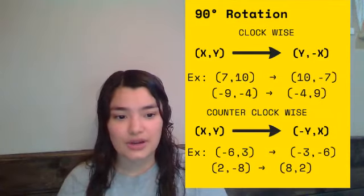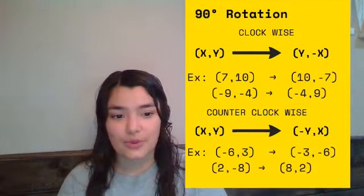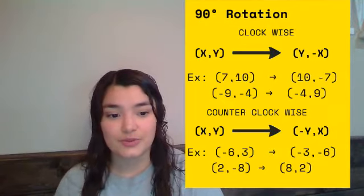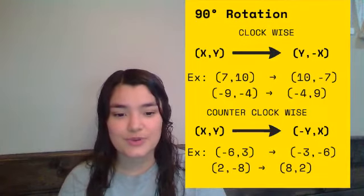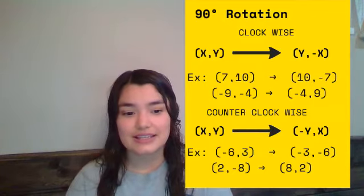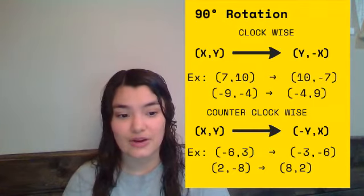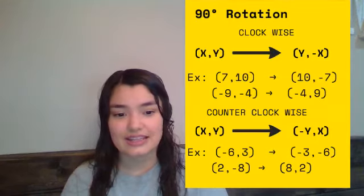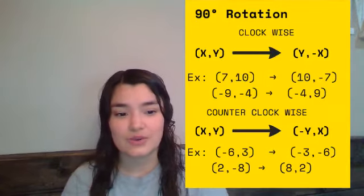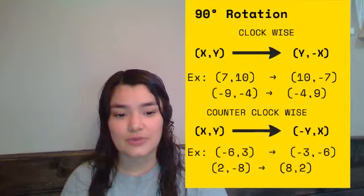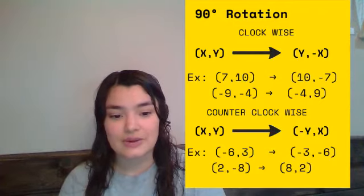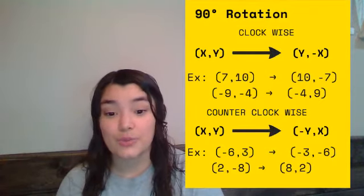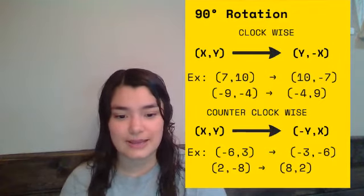The same thing occurs with counterclockwise, except that now the one that's changing to its opposite sign would be the y instead of the x. Here we have two examples. -6 flips and is now on this side, so your x flips and the one that's going to change signs is your y. The x remains the same, the y changes to its opposite sign, so from 3 to -3. Same thing down here, -8 now turns into a positive 8, and the 2 remains the same.